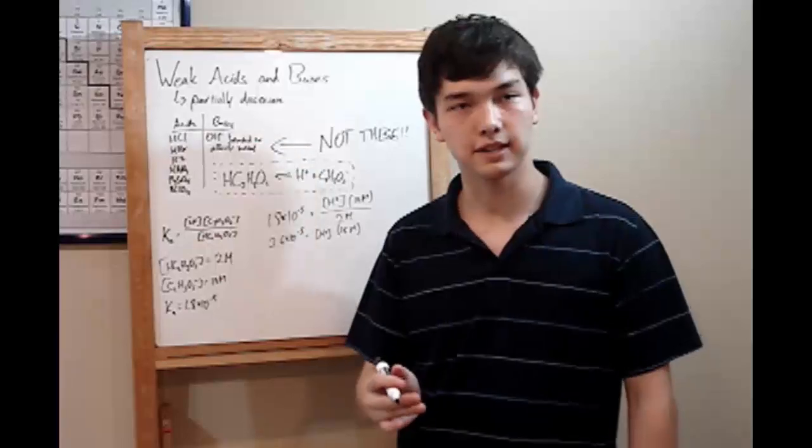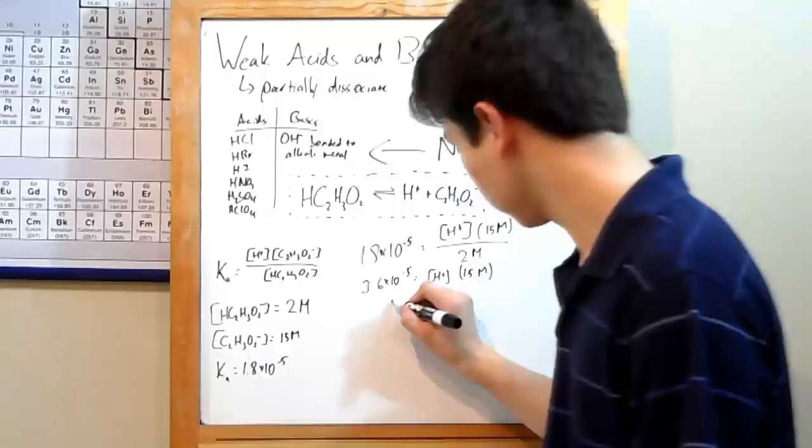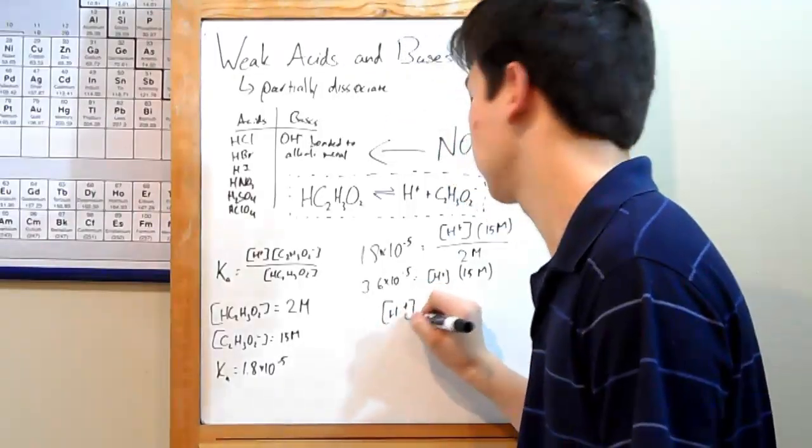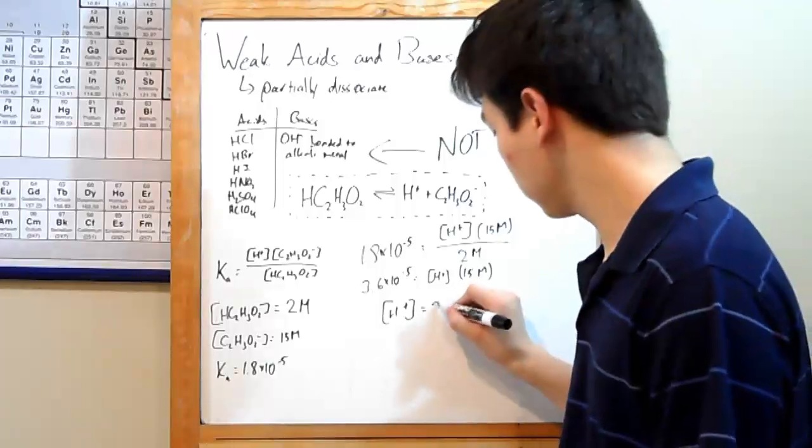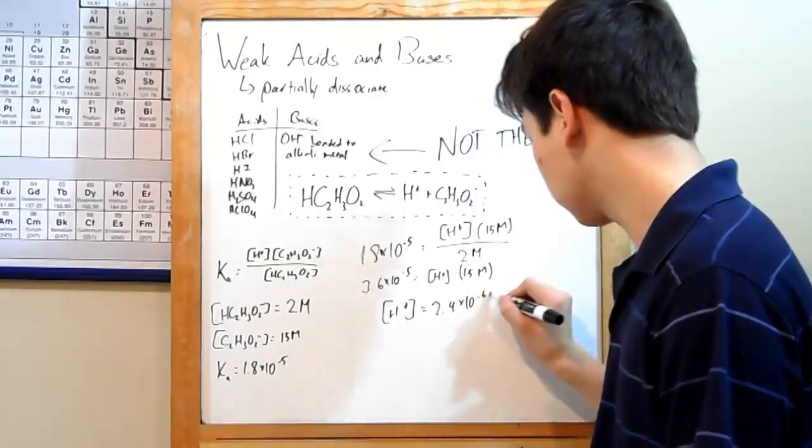Now all you have to do is divide by 15. And what that will give you is your H plus concentration. So 2.4 times 10 to the negative sixth molar.